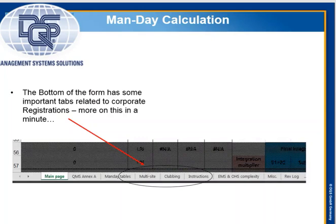At the bottom of the form, you're going to see some important tabs. These tabs have to do with multi-site and clubbing. I'm going to talk a little bit about what those terms mean.